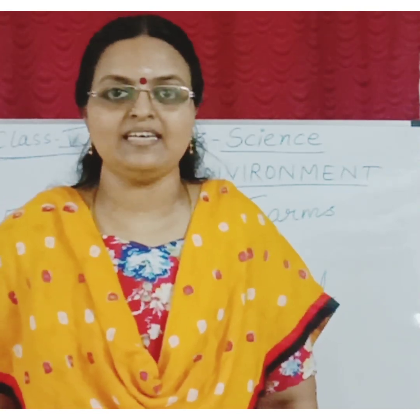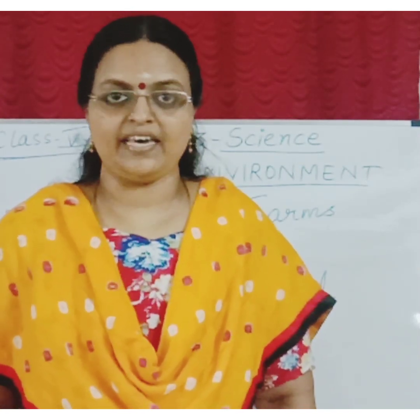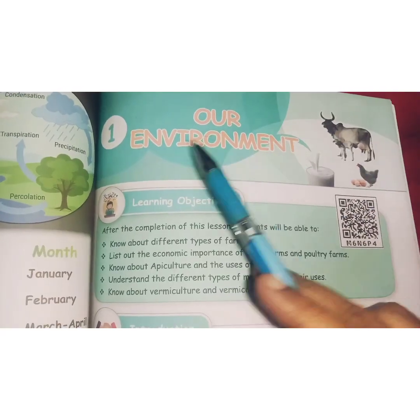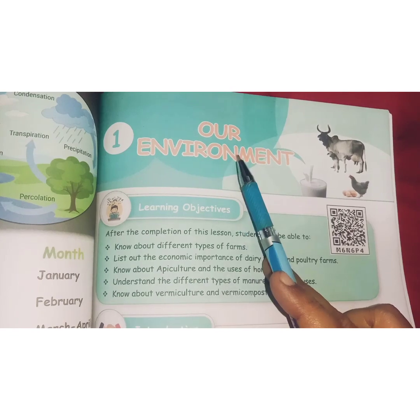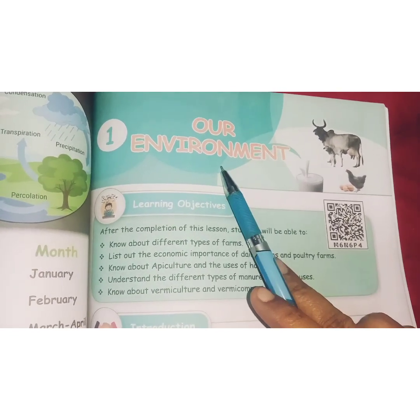Now it's time to see the first lesson — it is 'Our Environment.' In the last year you would have read about environment. We are going to see more in detail about it. Take your textbook and turn to the first lesson. Let us begin. Class 5, your lesson for Term 3, your first lesson is 'Our Environment.'